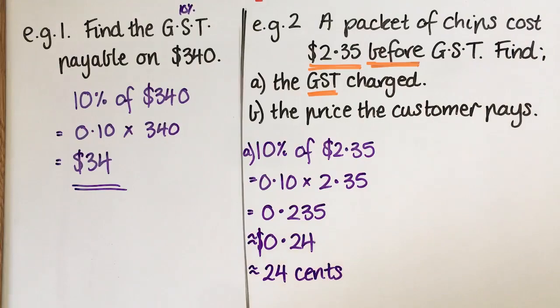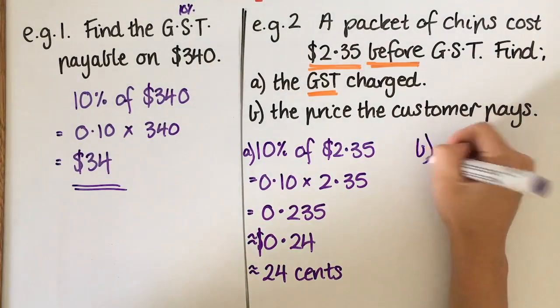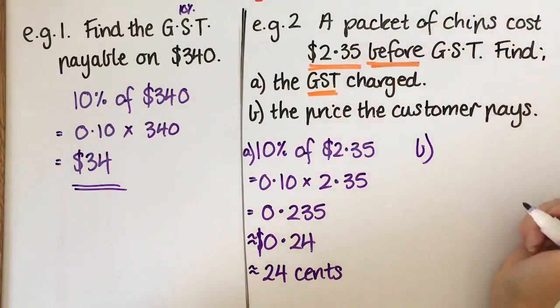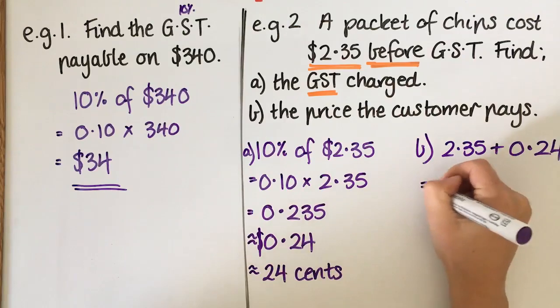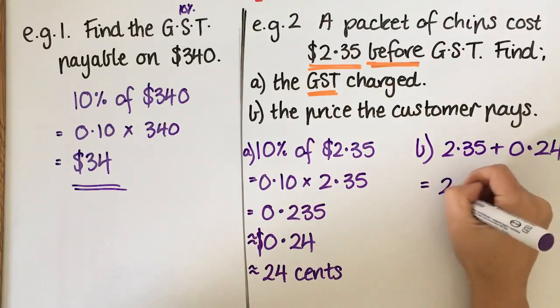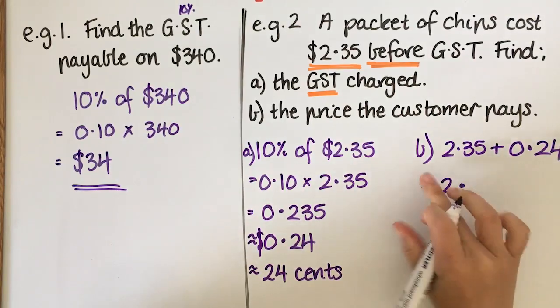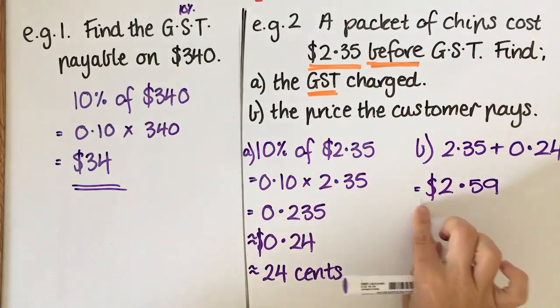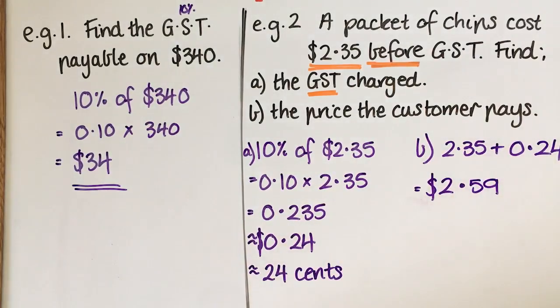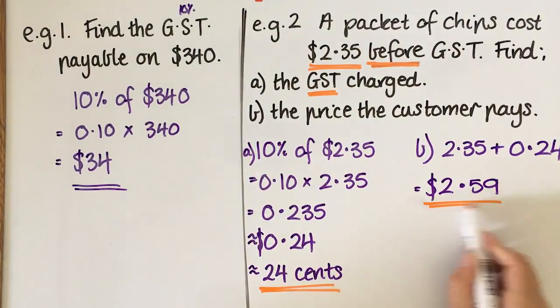Now the price that the customer pays, because you actually pay this and the GST. So this is how much it costs plus the 24 cents. So this and this together is going to be $2.59. Okay, so that's the total price that you would pay as a customer. So this is the GST. This is the price that you would actually pay as a customer.